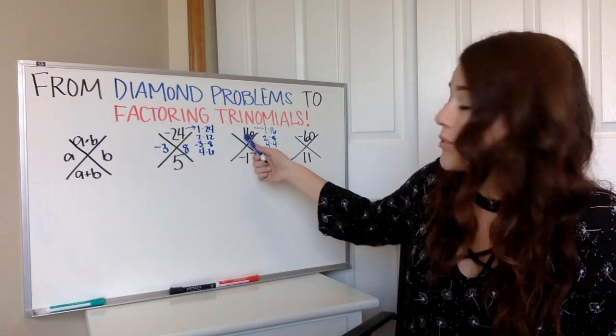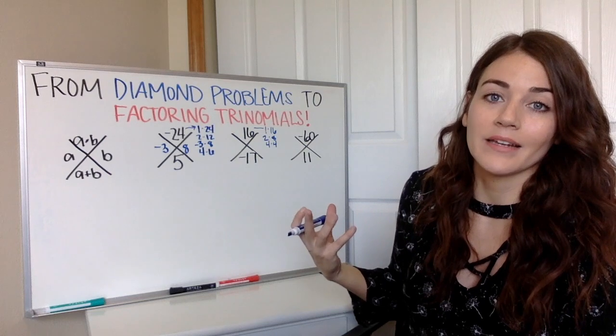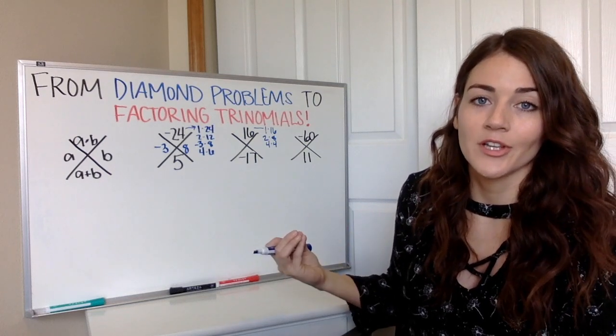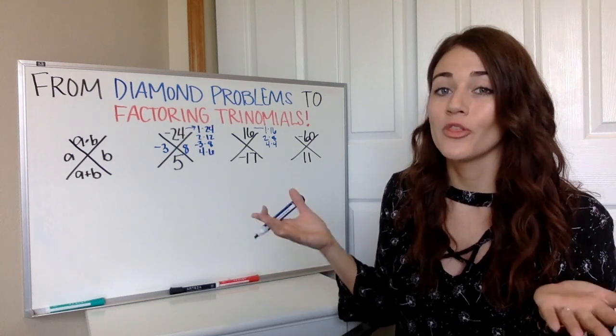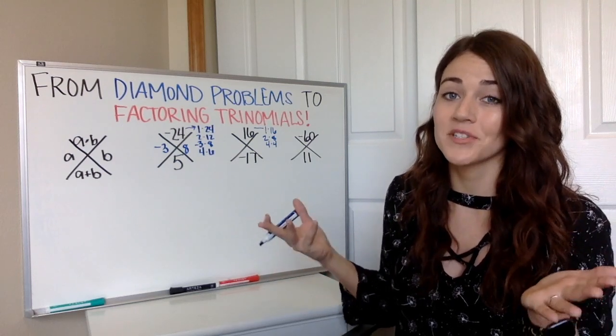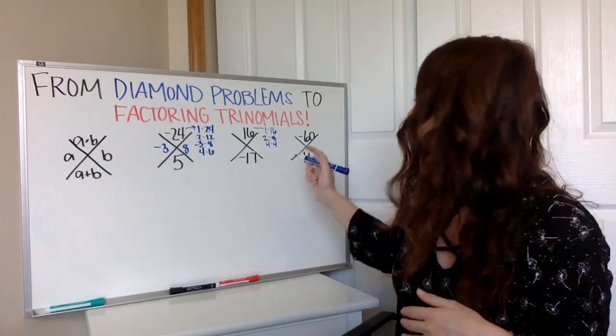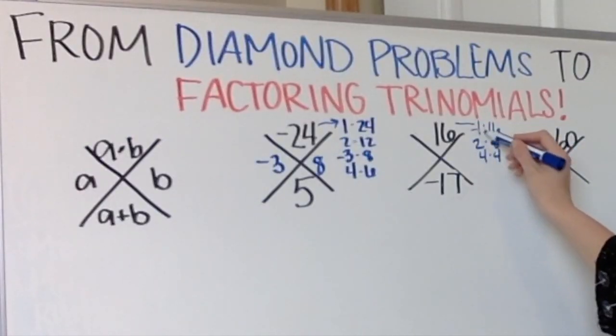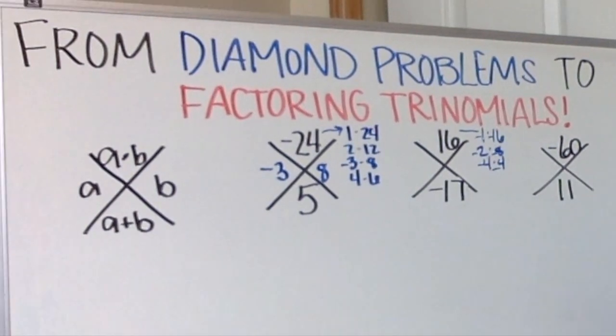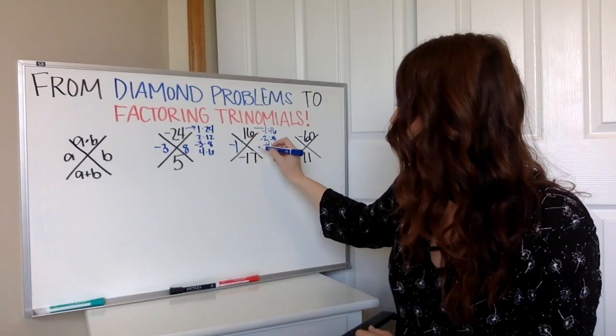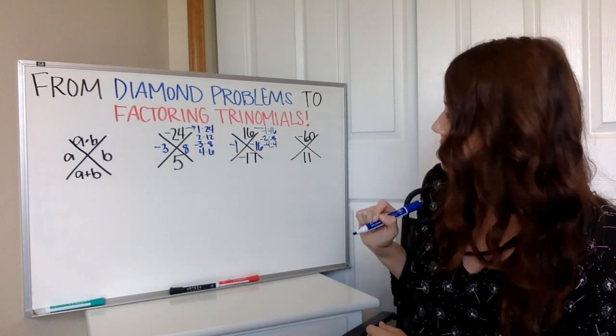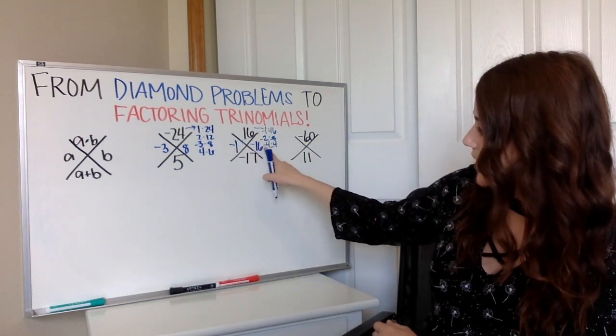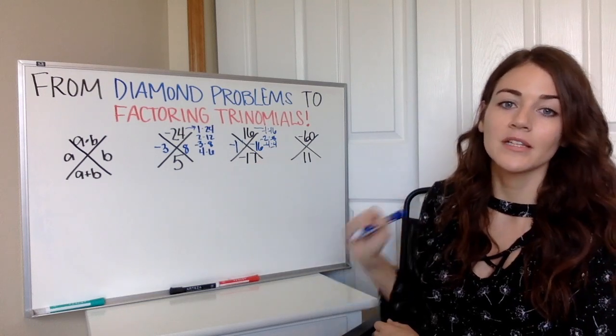All right, but it's multiplying to get us a positive. So if it's multiplying to get us a positive and adding to get us a negative, we know those two numbers both have to be negative. So if I put a negative on all of these, which one would add up to get me negative 17? Negative one and negative 16. A negative times a negative gets me a positive 16 and negative one plus a negative 16 gives me a negative 17.